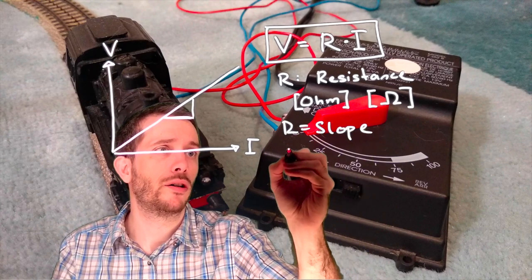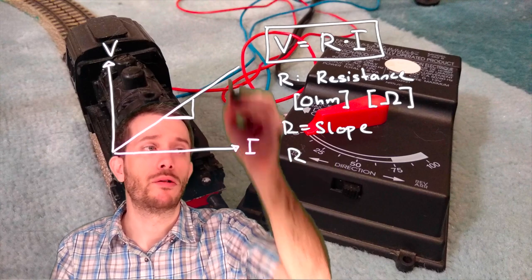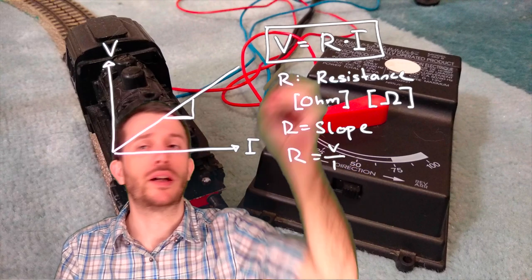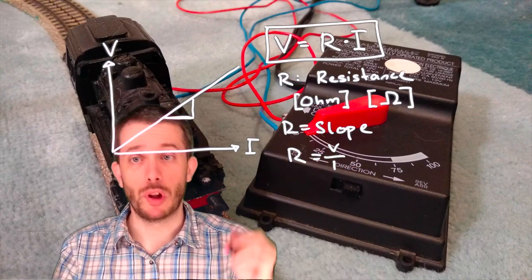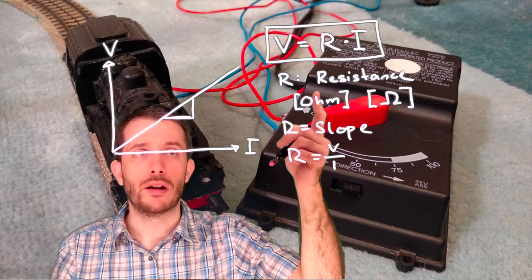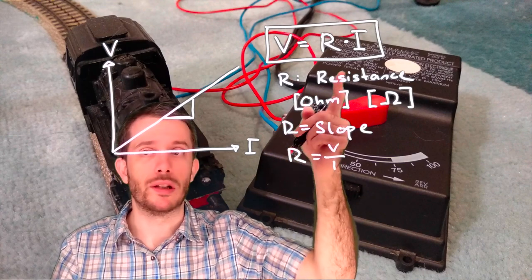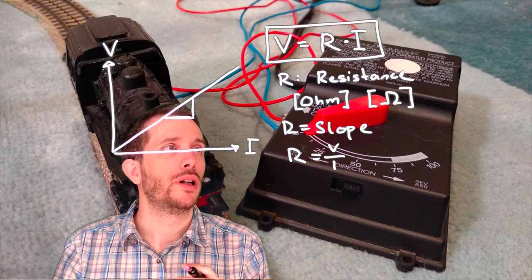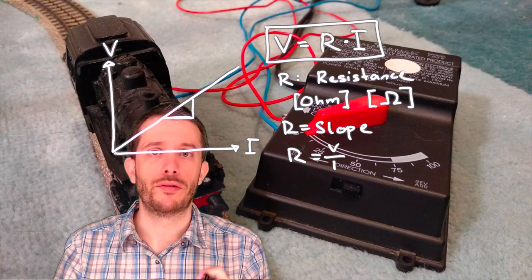So if I calculate the slope, that would be rise, voltage, over run, current, and you see I get actually exactly the same law. This law is called Ohm's law. So the same person, Georg Ohm, after which we labeled the unit of resistance.